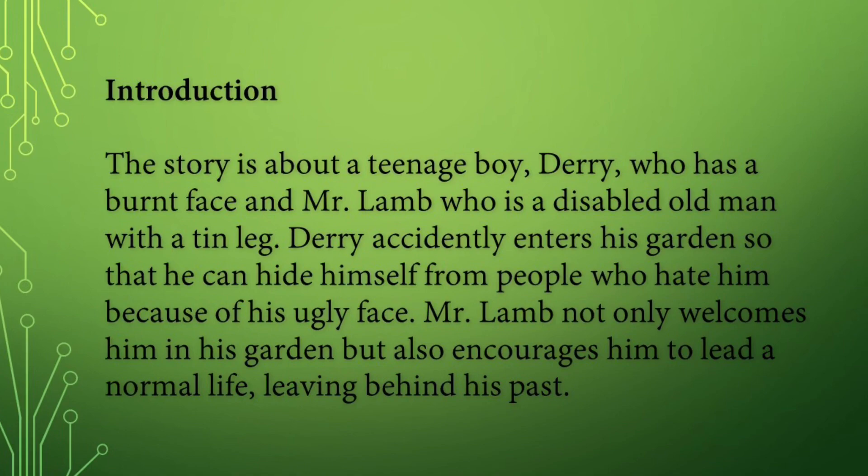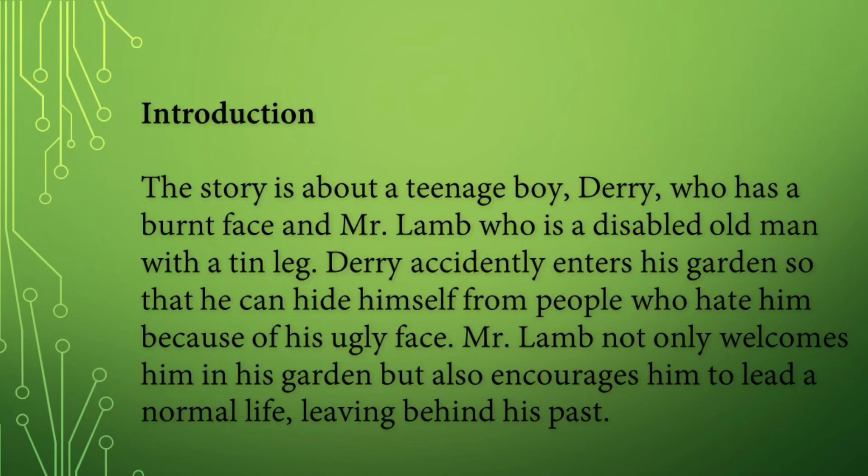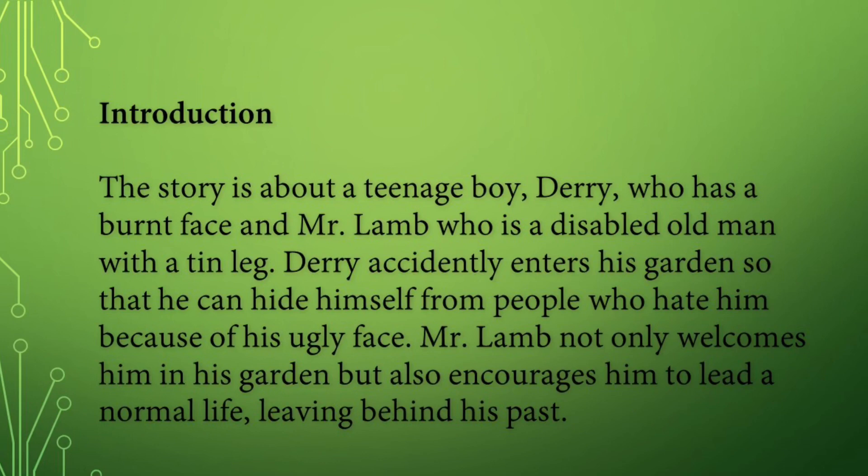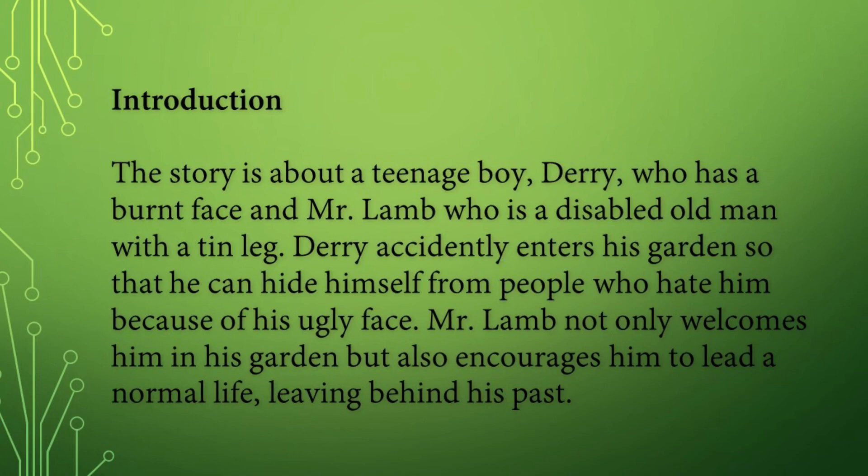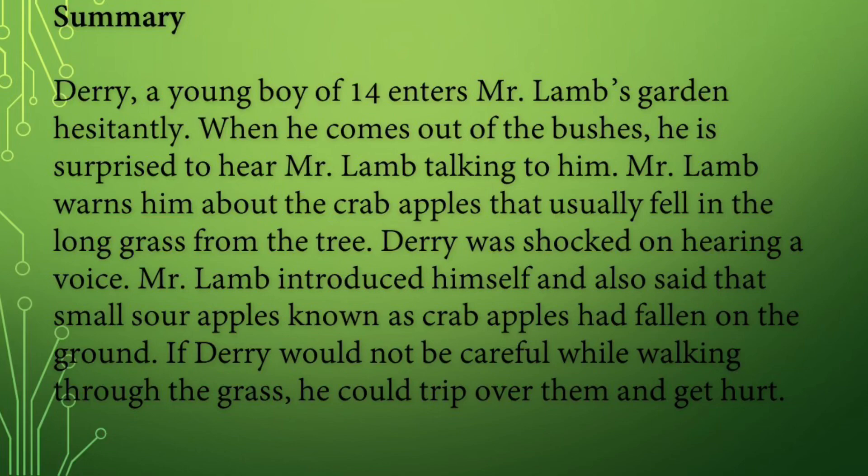Introduction: The story is about a teenage boy, Derry, who has a burnt face, and Mr. Lamb, who is a disabled old man with a tin leg. Derry accidentally enters his garden so that he can hide himself from people who hate him because of his ugly face. Mr. Lamb not only welcomes him in his garden but also encourages him to lead a normal life, leaving behind his past.